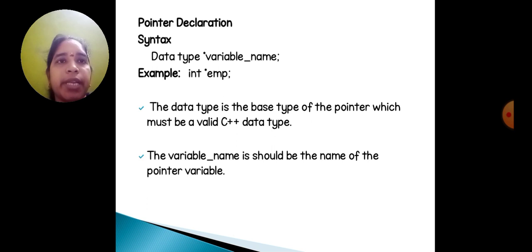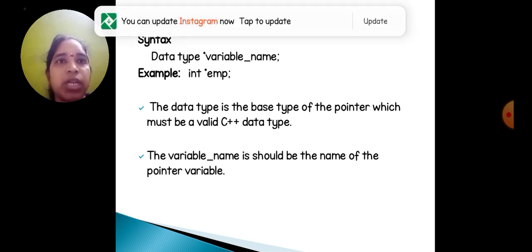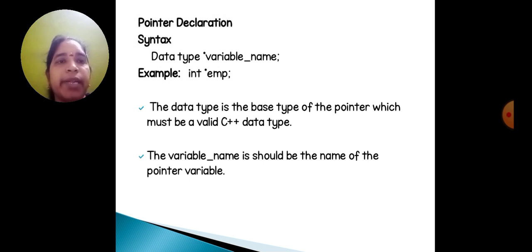Pointer declaration: data type, variable name. Example: integer employee. Before the employee variable, we should write an asterisk symbol. That is called a pointer. The data type is the base type of the pointer, which must be a valid C++ data type.